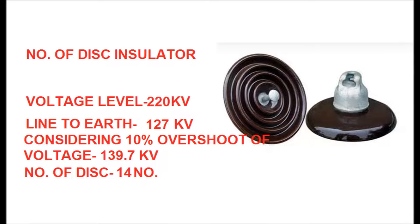For the 220 kV system, the line-to-line voltage is 220 kV. The line-to-earth voltage is 220 divided by √3, equal to 127 kV. Considering 10% overvoltage: 127 × 1.1 = 139.7 kV. Dividing 139.7 by 11 gives approximately 13. Adding 1 for safety margin gives 14 discs for suspension type string and 15 discs for tension type string in a 220 kV system.